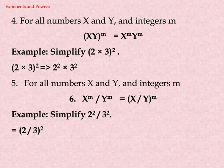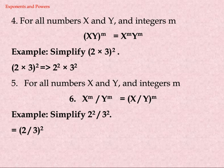Law 4: For all numbers x and y and integer m, (xy)^m = x^m × y^m. Example: simplify (2 × 3) power 2. (2 × 3)^2 = 2^2 × 3^2.